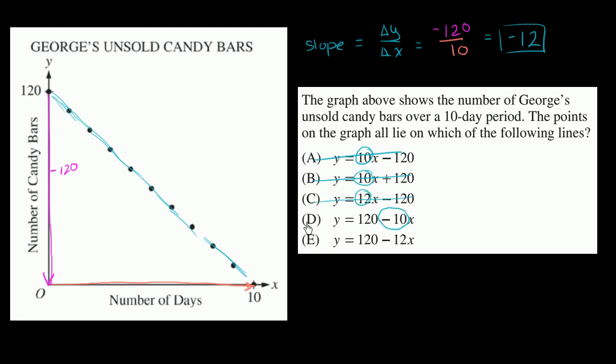Slope of negative 10. That's not right. And right over here, we have our last choice. Slope of negative 12. So our choice is E.